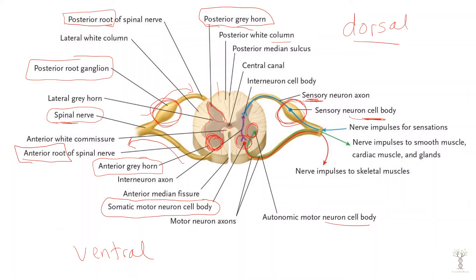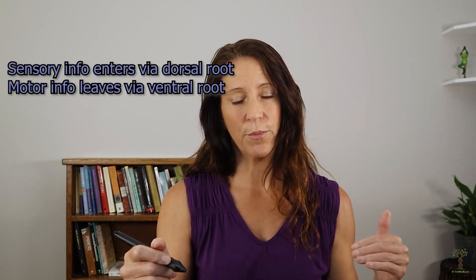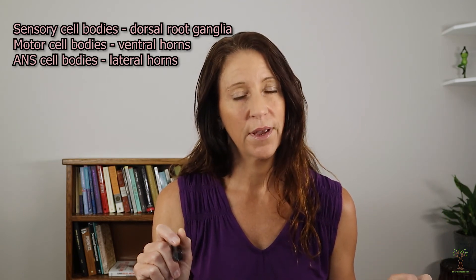The other thing to point out is where the synapses are. When sensory information comes into the spinal cord it synapses onto small interneurons. Small interneurons do not have myelin and they are part of the gray matter. Key things to know: white matter versus gray matter; where is sensory information coming in; where is motor information going out; where are the sensory cell bodies; where are the motor cell bodies; and where are the autonomic nervous system cell bodies.